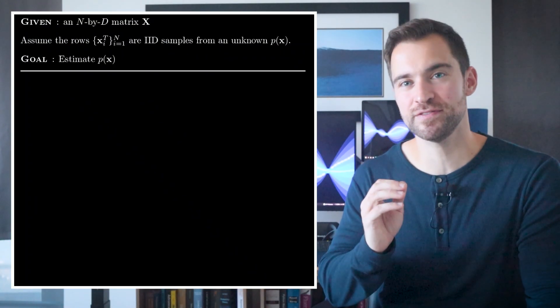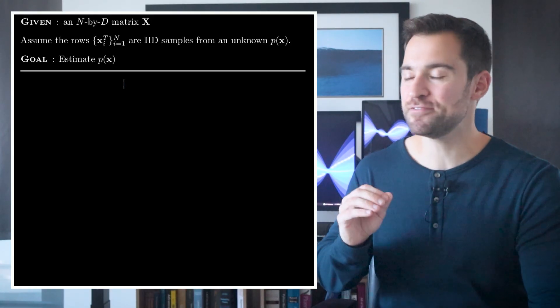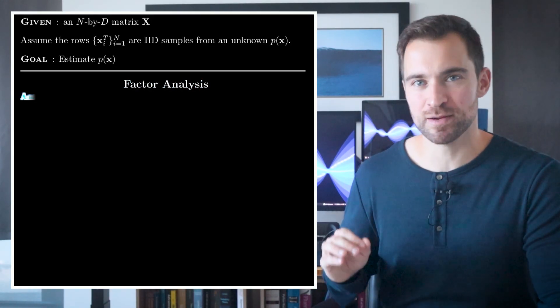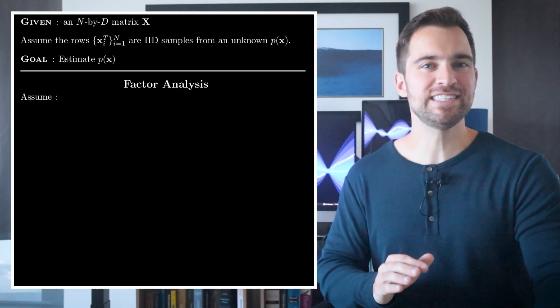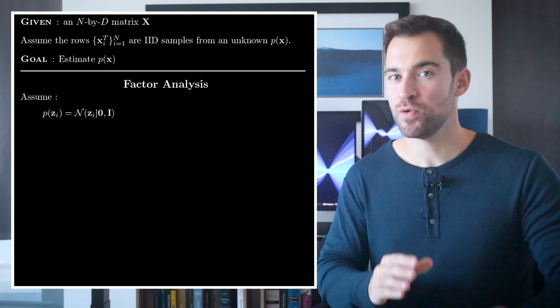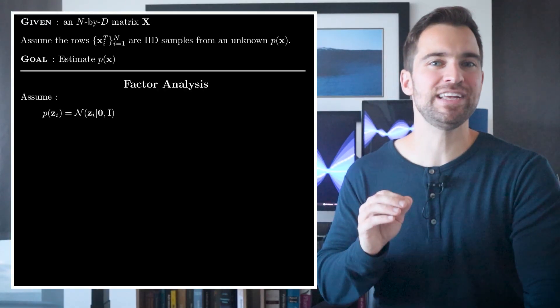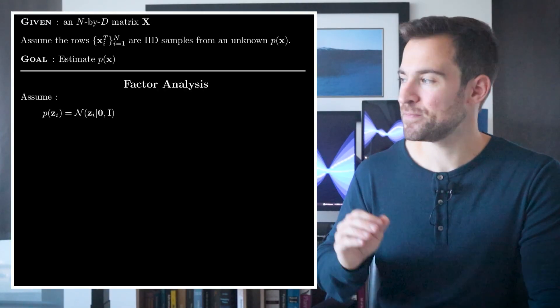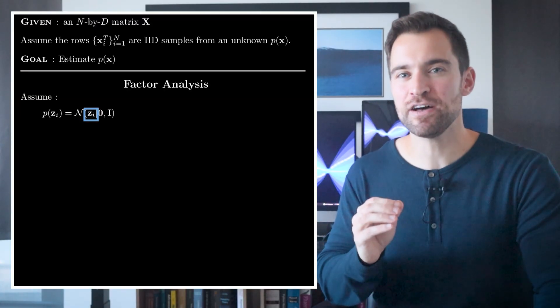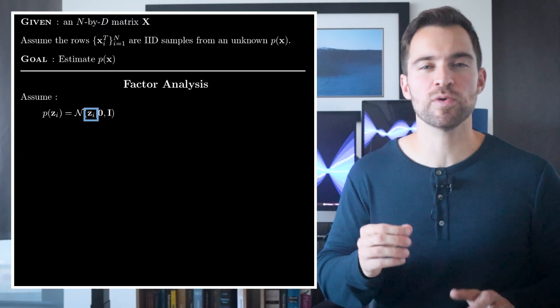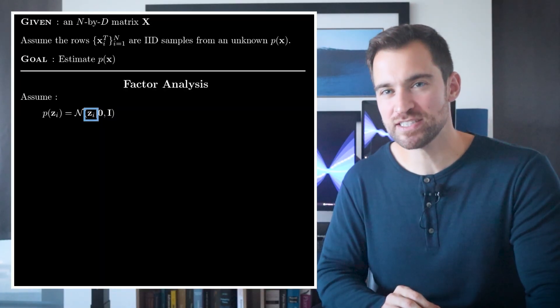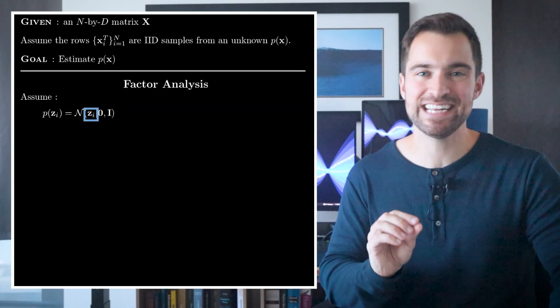So this is what people call the generative story. Now, let's state the factor analysis model properly. We start with the assumptions. First, we state that the latent variable ZI has a multivariate normal distribution with a mean of zero and a unit diagonal covariance matrix. Here, ZI is an unobserved length L vector where each is paired with one of our observed XIs. Note, this notation compresses those scalar multipliers we saw earlier into a vector.